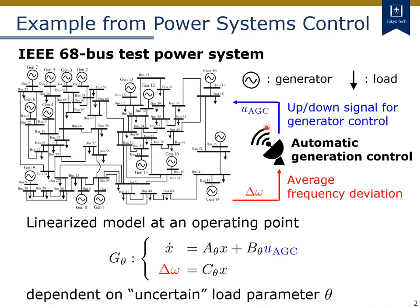Please note that both delta omega and U_AGC here are supposed to be scalar signals. In general, a power system model is non-linear, but we can linearize it at an operating point of interest. Then, the resultant linearized model, denoted here by G_θ, is dependent on some uncertain parameter θ.